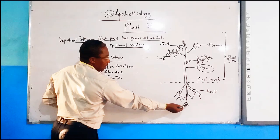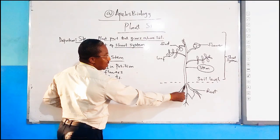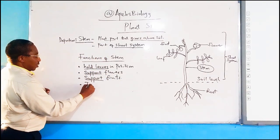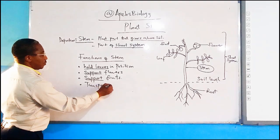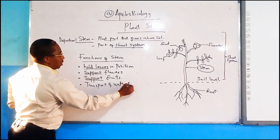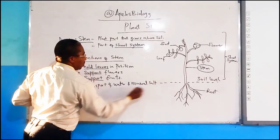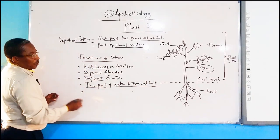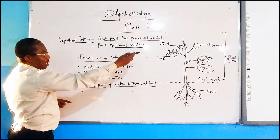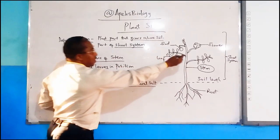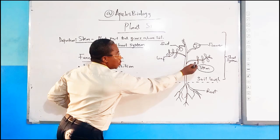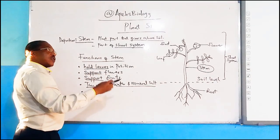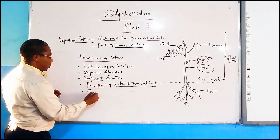Interestingly, as you can see, water and mineral salts are absorbed from the soil, and inside the stem there are vascular tissues that transport water and mineral salts. So another function of the stem is the transport of water and mineral salts. Also, because the leaves carry out the process of photosynthesis, they contain glucose, and this glucose is transported through vascular tissues to the stem — meaning the stem can be used as a food storage structure. So another function of the stem is food storage.